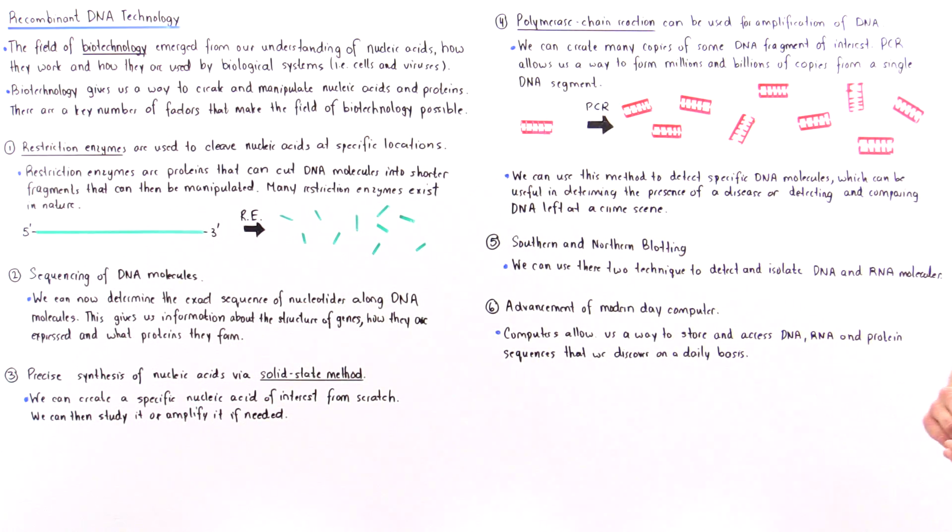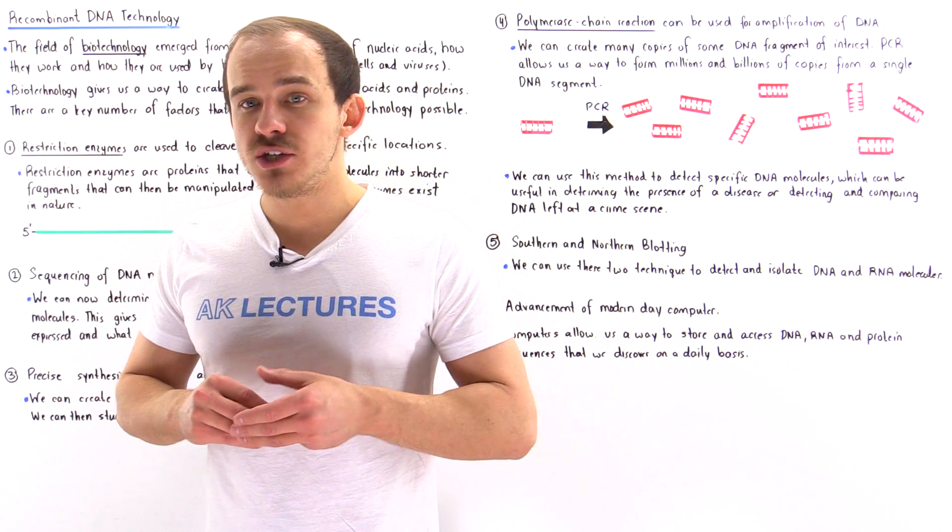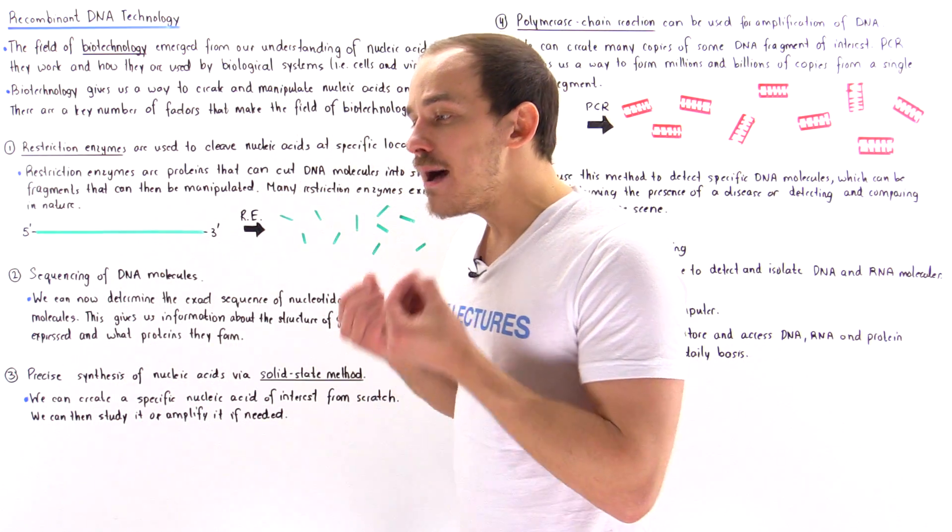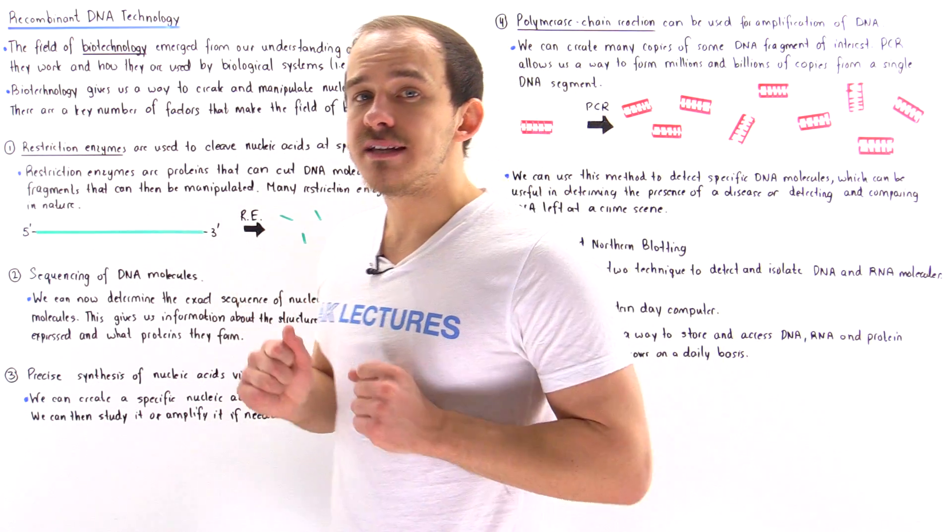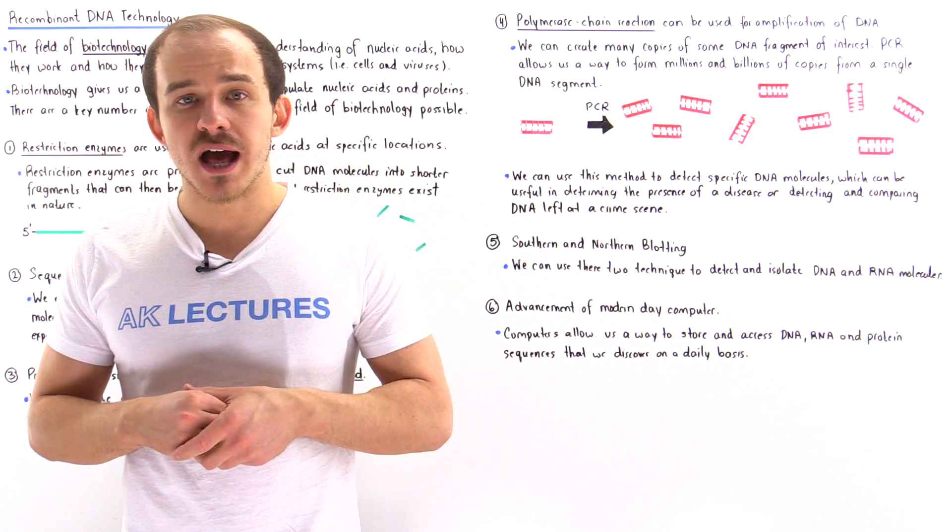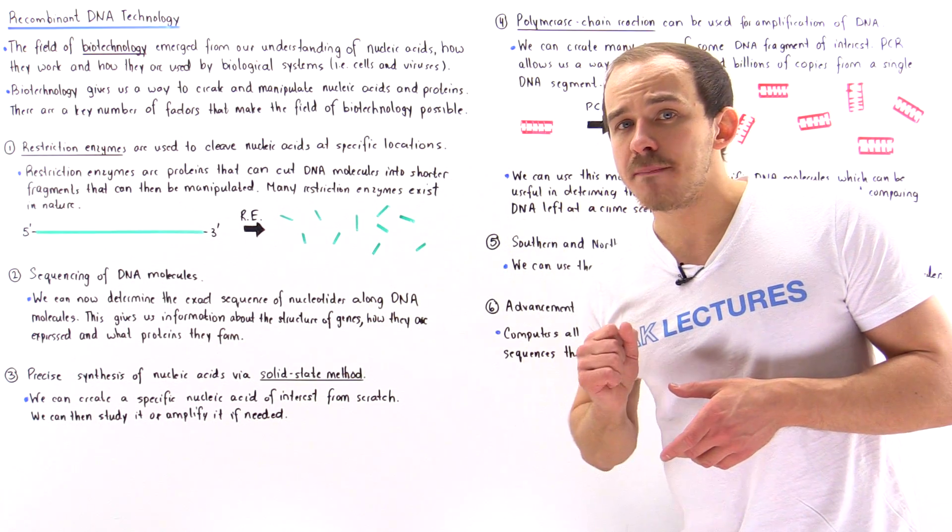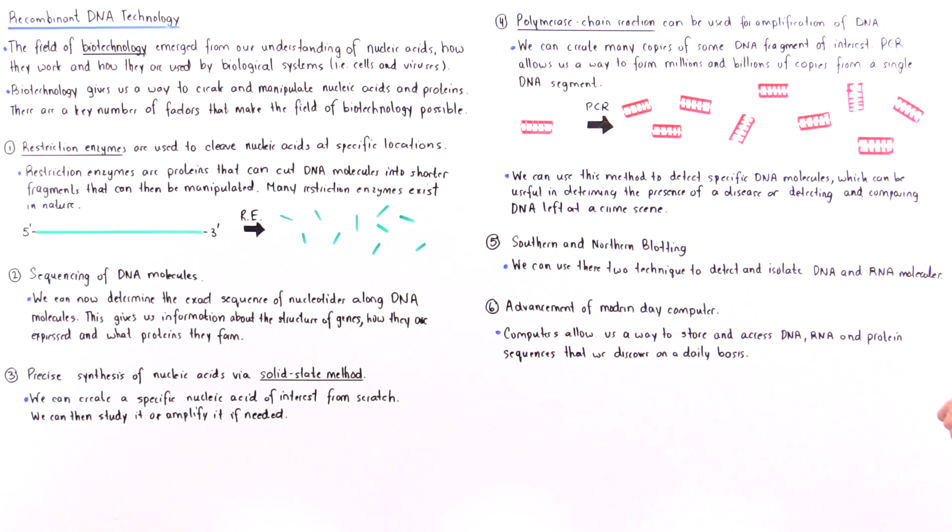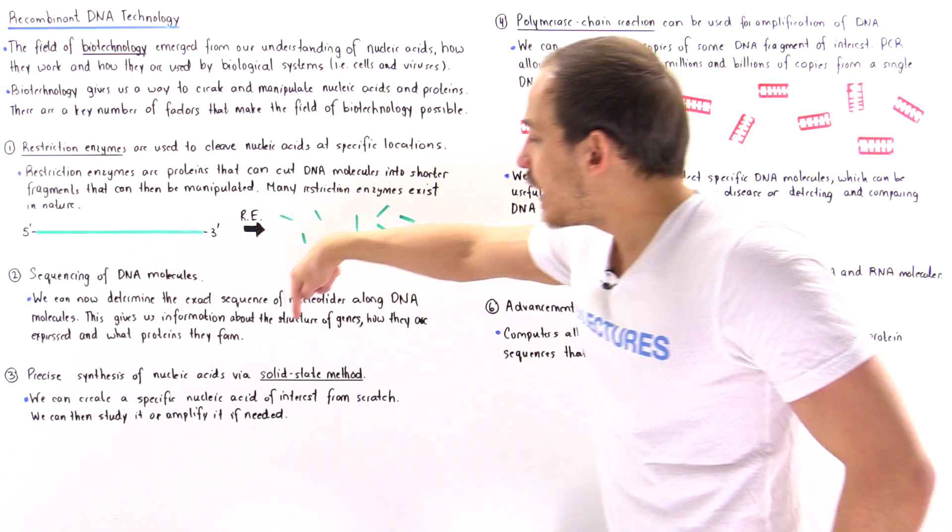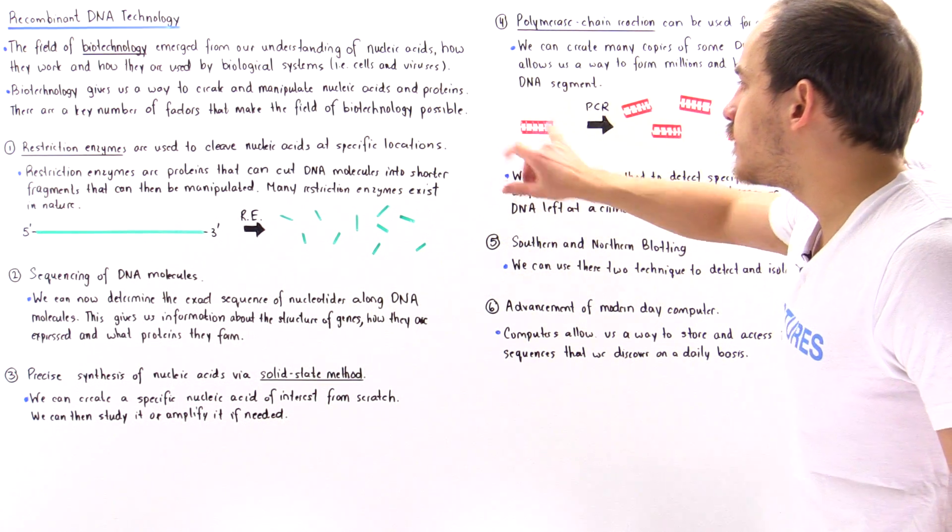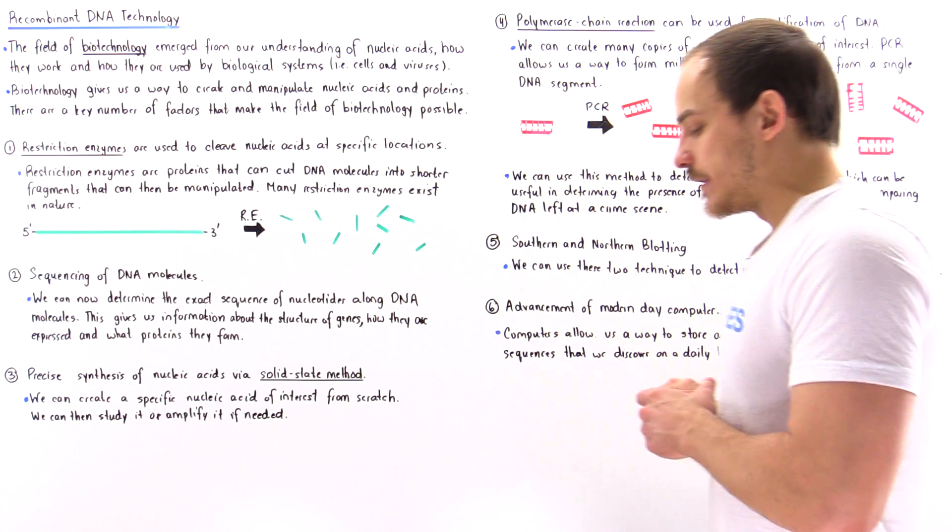Well, that leads us into factor number four. We have a process known as the polymerase chain reaction or simply PCR that allows us to amplify a single DNA molecule, that is make many, many, many copies of that single molecule that we want to study. In fact, PCR allows us to make millions and billions of copies from a single individual DNA molecule. So if we synthesize that fragment of DNA by using this solid state method, we can then amplify the DNA and produce many, many copies of that DNA molecule.